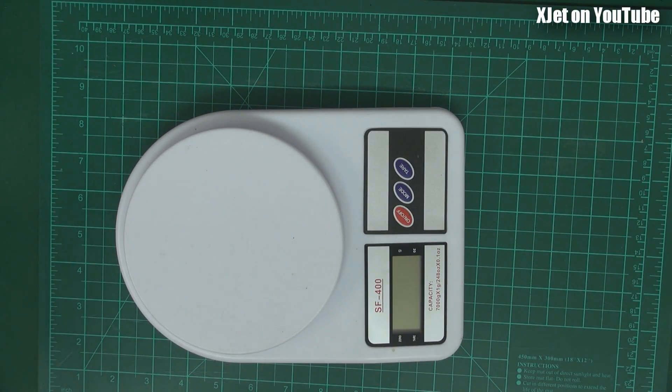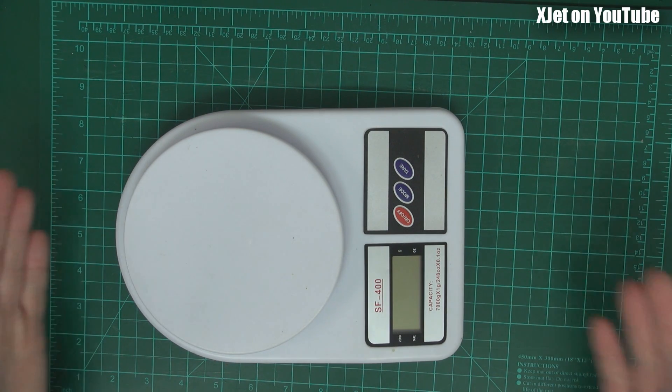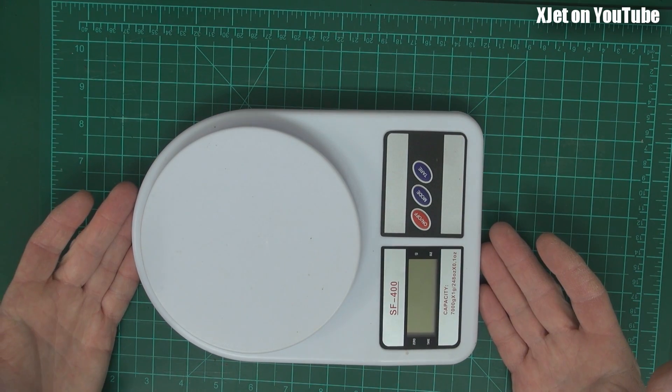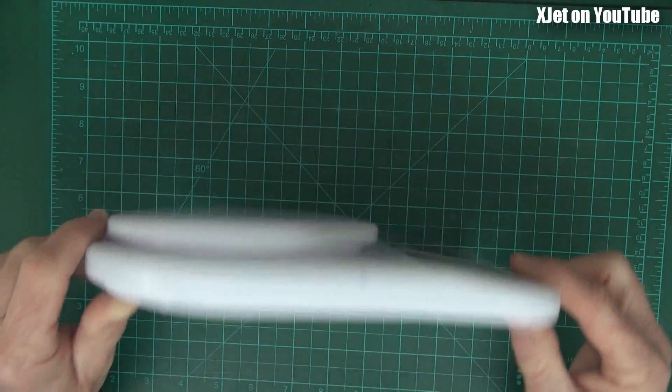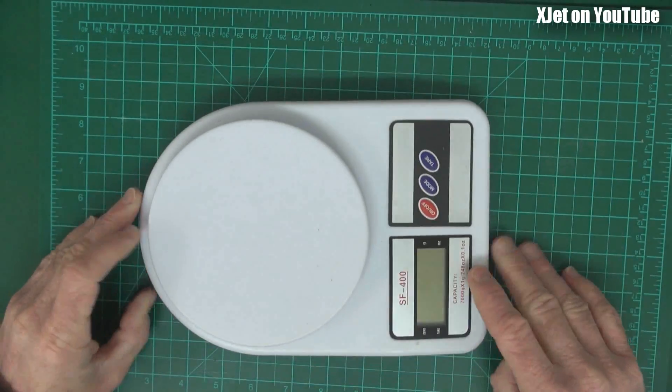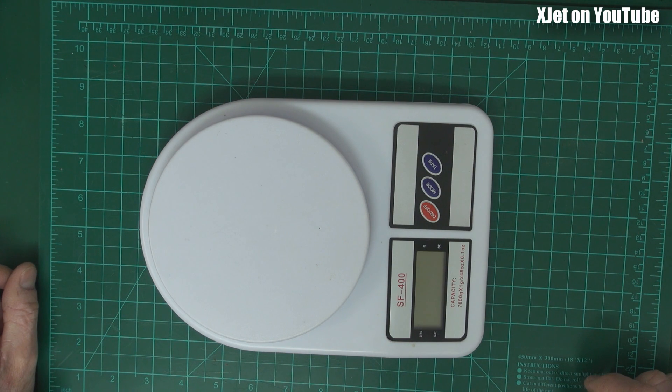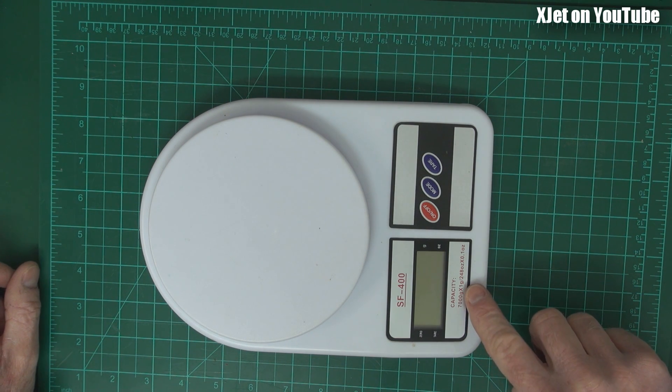Hi there, now regular viewers of my RC model reviews channel will know that I have these scales from hell, the lottery scales which are a very cheap product. It's just the fact that it's very cheap scales and they don't work well at all. They're supposed to have a capacity of seven kilograms in one gram increments.